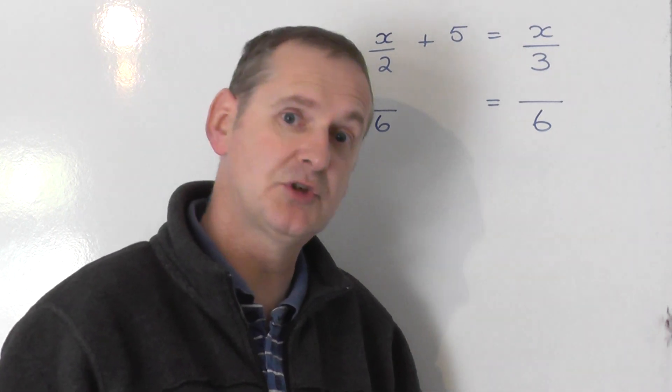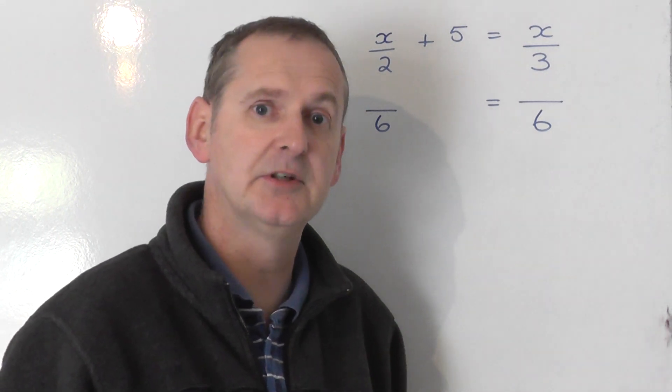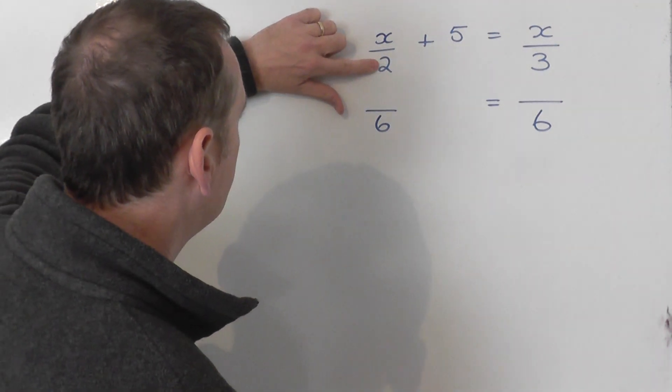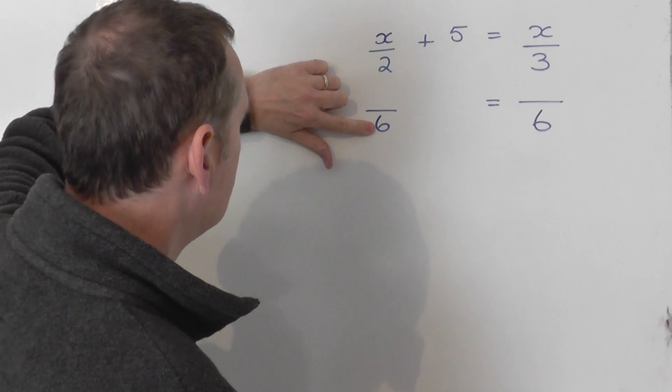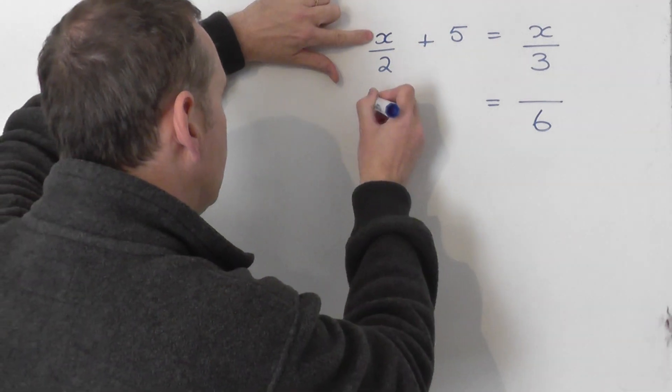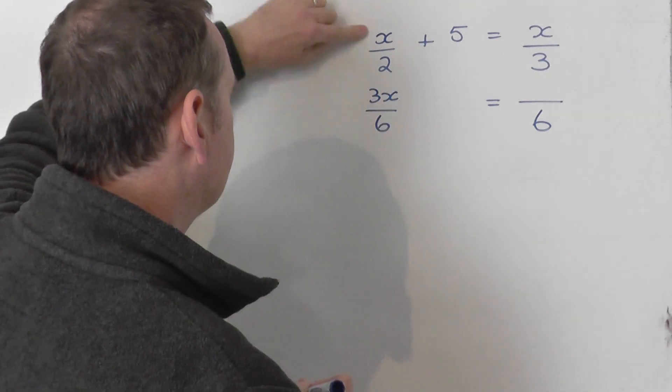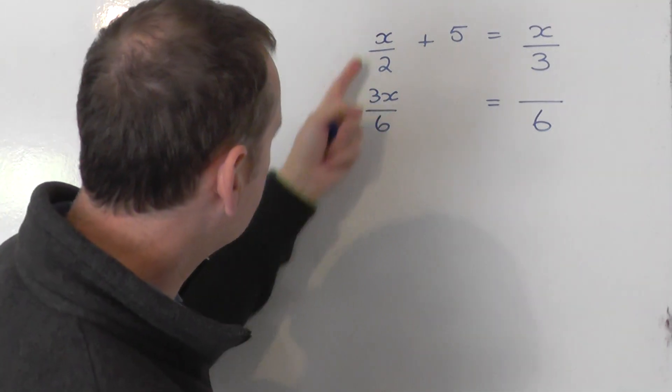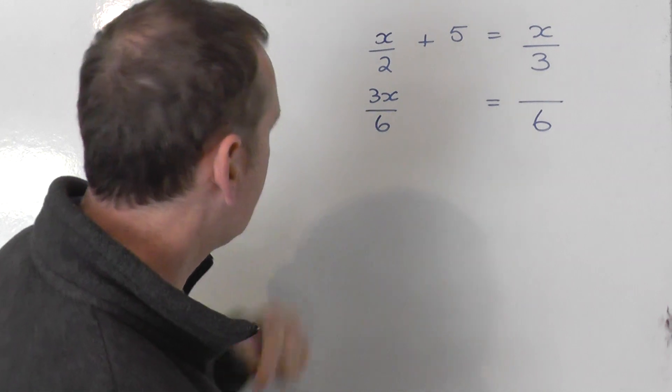For example, a half is the same as two quarters if you double top and bottom. So what I'm going to do here is actually times the bottom number by 3 to get 6. And as long as I times the top number by 3, these two fractions are the same thing. So I'm changing that into that, that into that.